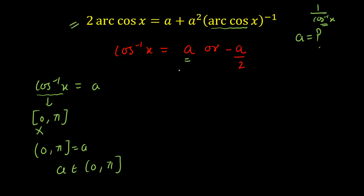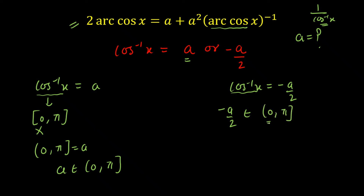For Case 2, cos⁻¹(x) = −A/2. Applying the same range (0, π] — open at 0 because cos⁻¹(x) is in the denominator — we have −A/2 ∈ (0, π]. Multiplying by 2 gives −A ∈ (0, 2π], and multiplying by −1 (reversing the inequality) gives A ∈ [−2π, 0).